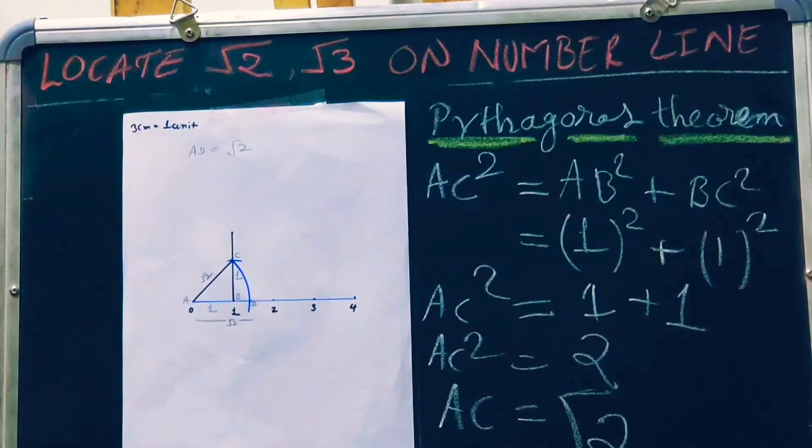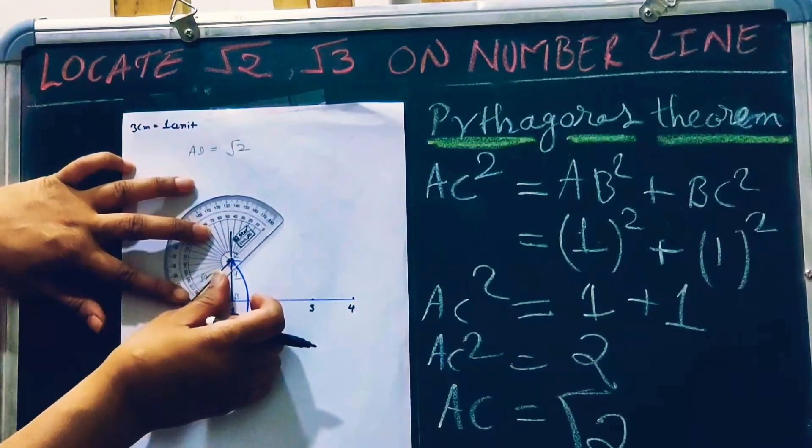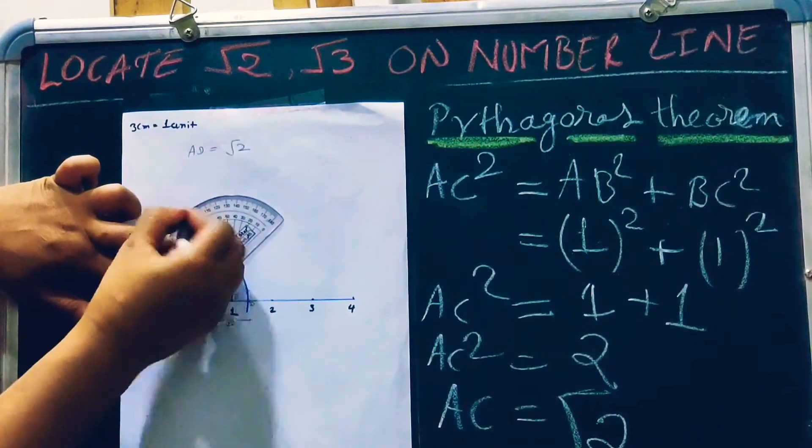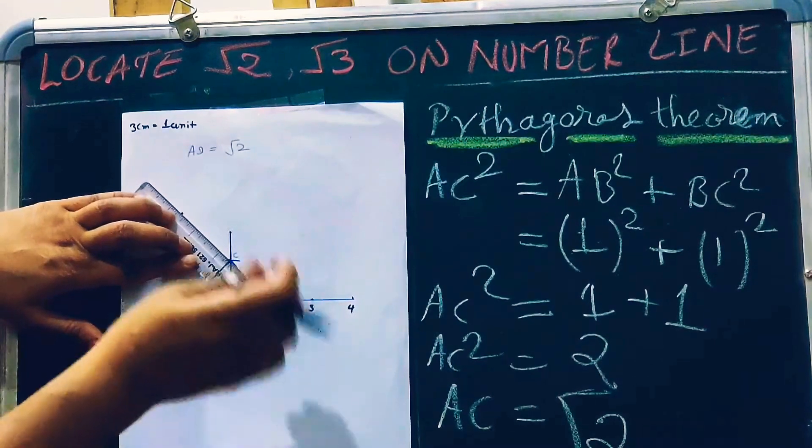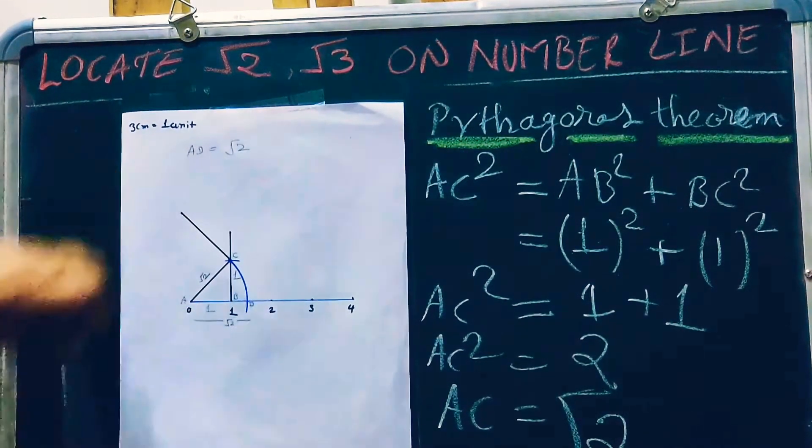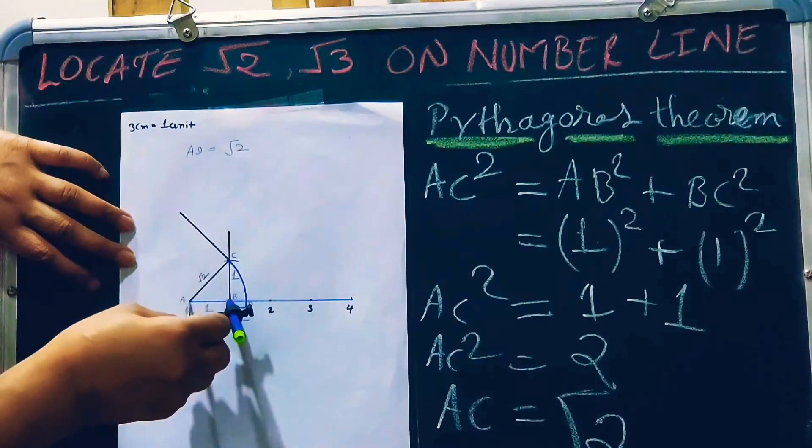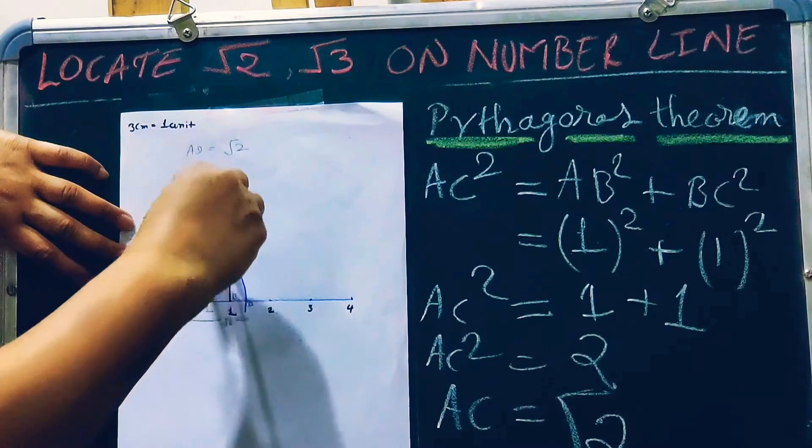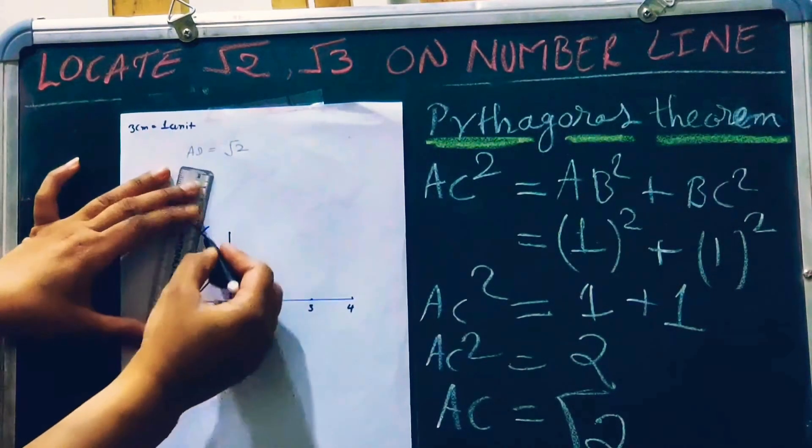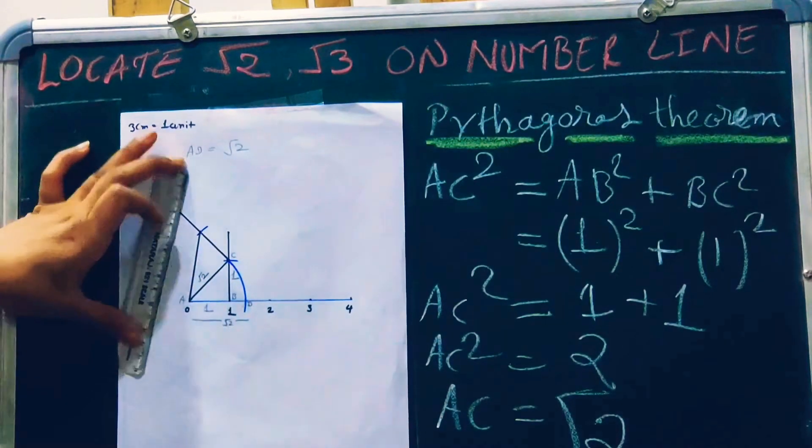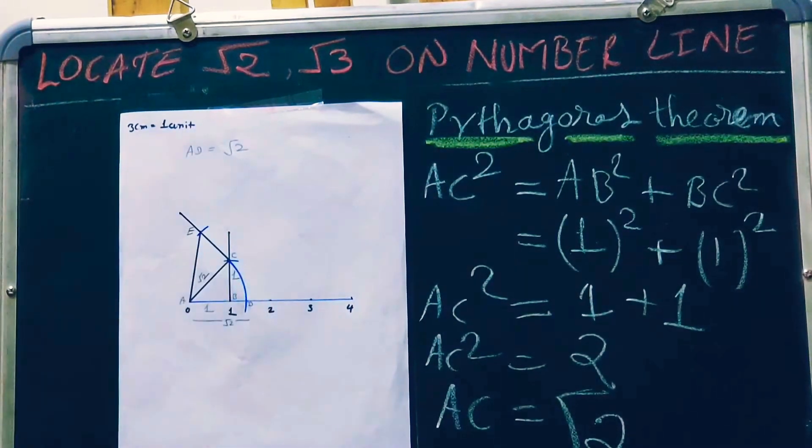Now for root 3, it's very simple. Similarly, we have to draw a perpendicular on this point. Make a perpendicular at this point. Cut 1 cm apart from C on this line and join this point to the starting point A. Mark this point as E.